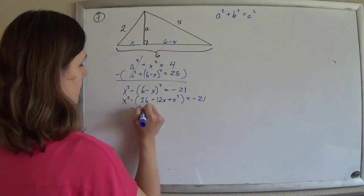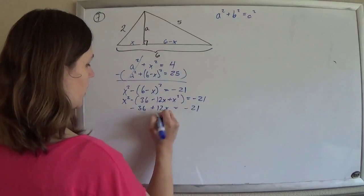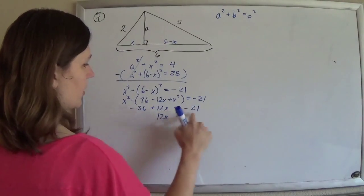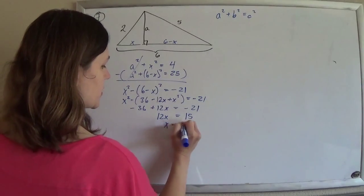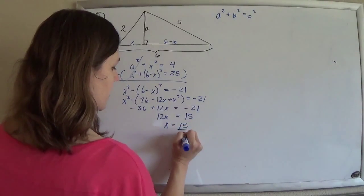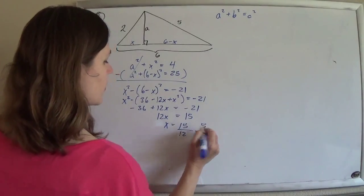And then I'll just have minus 36 plus 12x equals minus 21. Add the 36 over, I'll get 15. Divide by 12, I get x is 15 divided by 12. Divide by 3, I get 5 over 4 for the x.